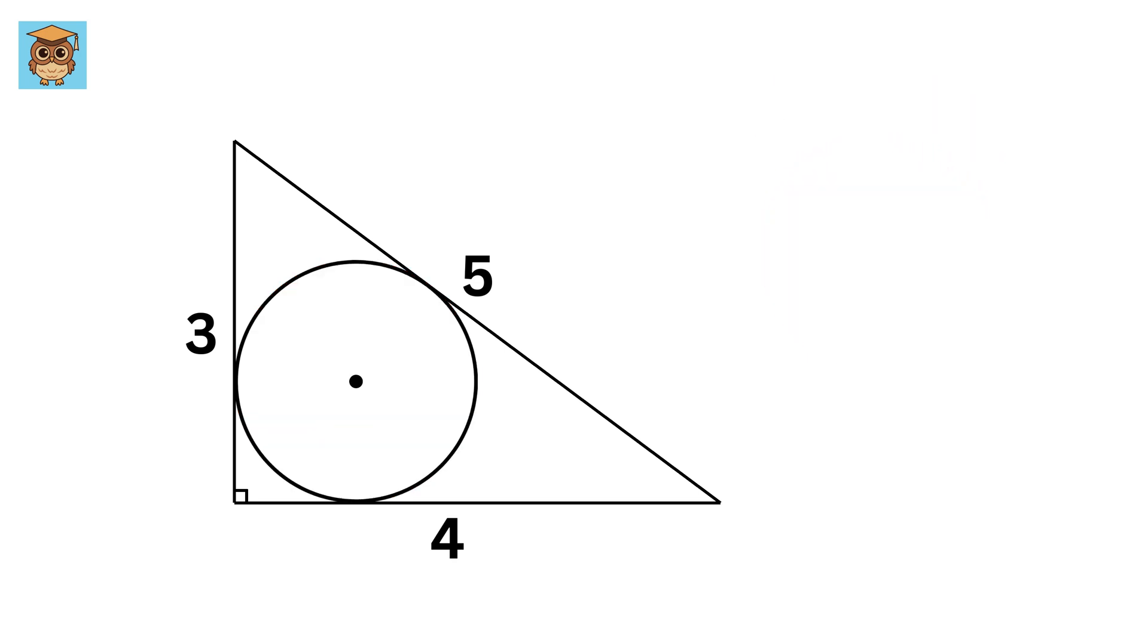First, let's draw the center of the circle. Now draw a radius like this and this. The radius will always be at a right angle to the tangent point, and therefore this whole thing will become a square of side length r. So this side will also be r and this side will also be r.